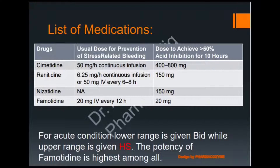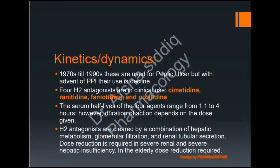Famotidine is considered the most potent among all listed H2 receptor antagonists. Moving to pharmacokinetics: from 1970 to 1990 these were used for peptic ulcer, but with the advent of PPI their use declined. All 4 H2 receptor antagonists are commonly used in clinical settings, with a serum half-life of about 1.1 to 4 hours. Serum half-life means the drug concentration becomes half — 50% is eliminated and 50% remains.